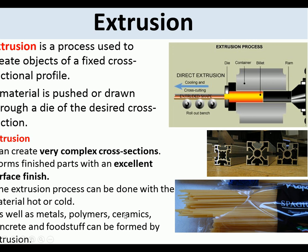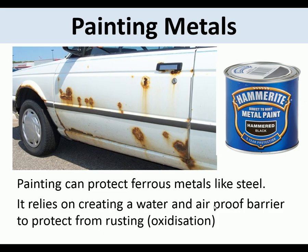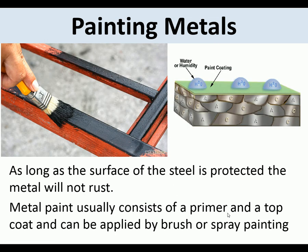Extrusion also works with polymers, ceramics, and foodstuffs — that's how spaghetti is made. Painting metals: painting can protect ferrous metals like steel by creating a water- and air-proof barrier to prevent rusting. Oxidization like rust needs both water and air, so a coat of paint protects against it. Metal paint often consists of a primer and a top coat, applied by brush or spray painting.